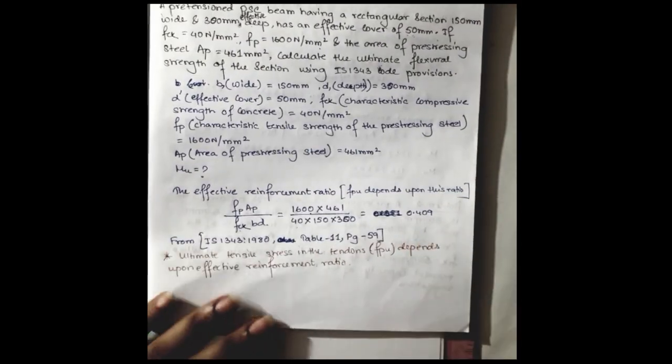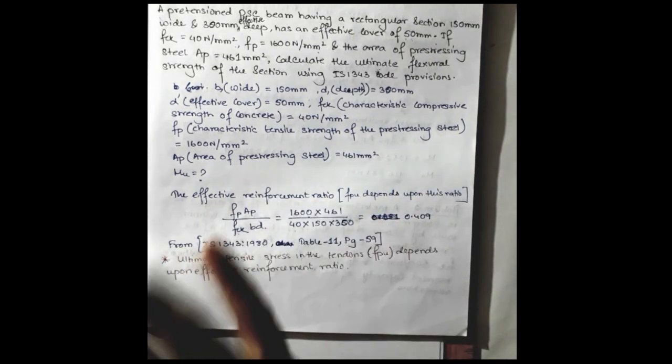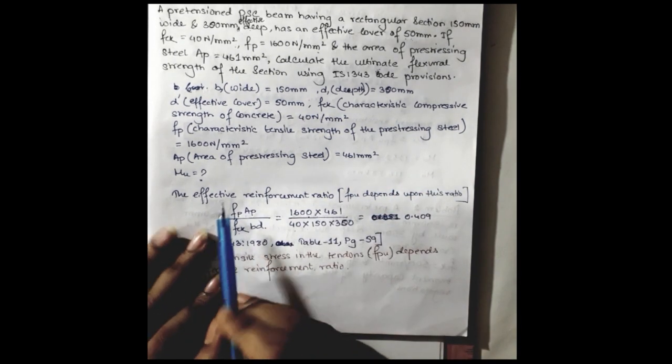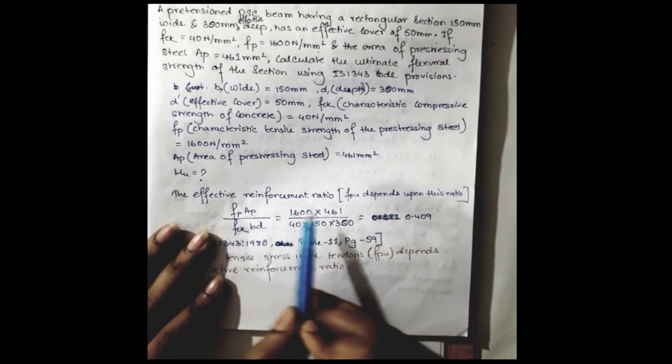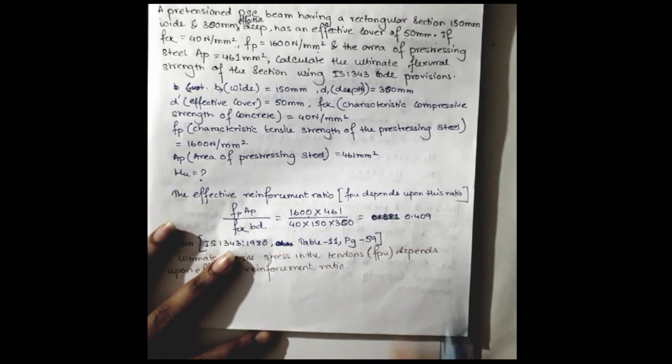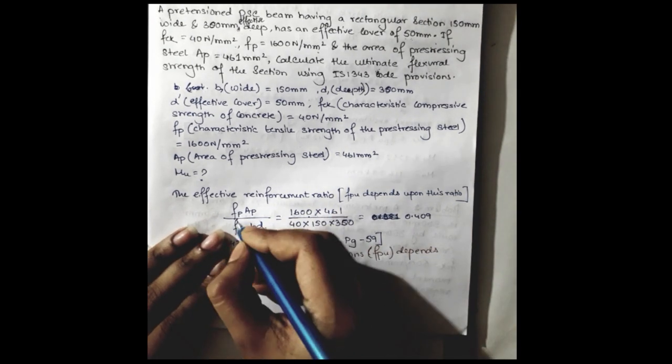As we discussed in the earlier video, the term effective reinforcement ratio, where fp Ap, this part is depending on the steel and this part is depending on the concrete.